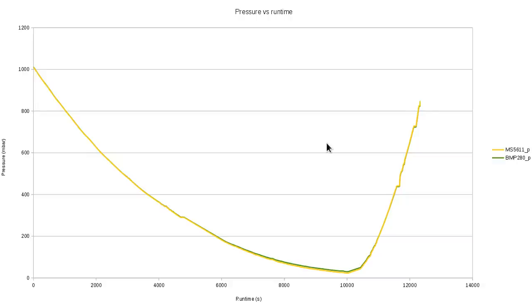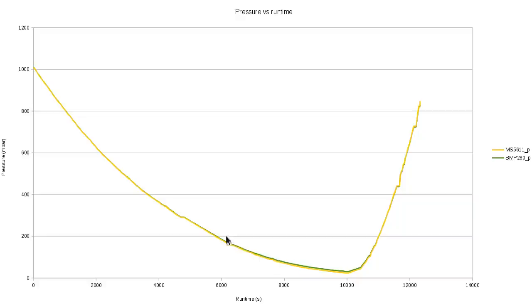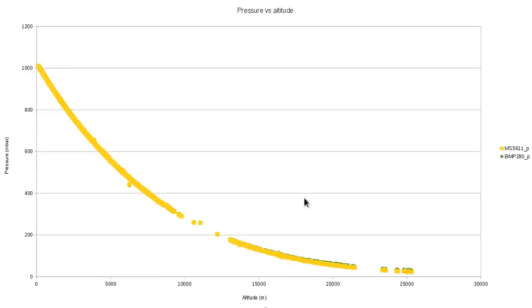This is air pressure versus time. I thought the two barometers would give me fairly different readings — in my experience using these on quadcopters, the MS5611 is usually the best, but only by a little bit. But it's almost exactly the same here. Even though we have a big lump of data missing, it doesn't look like it because the straight line fits into the curve quite nicely. That is pressure versus time, and then this is pressure versus altitude — they're almost on top of each other, so you can't see the green trace very well.